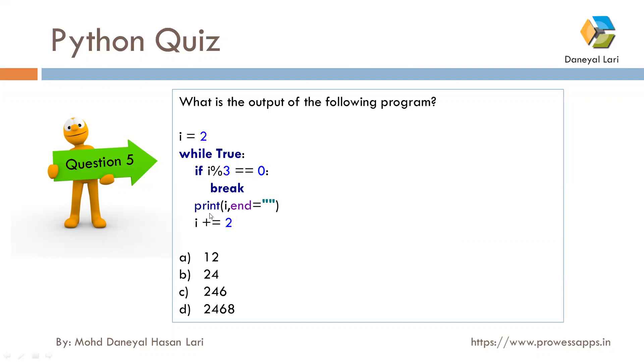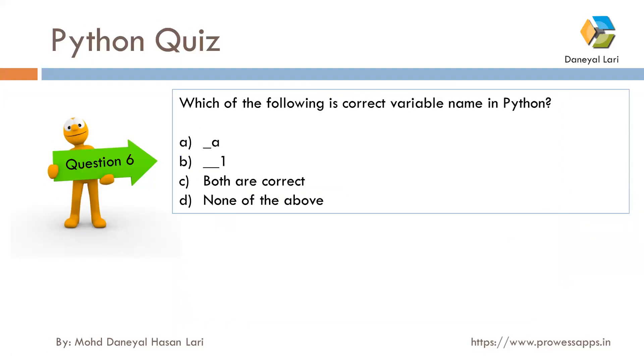Next question was: which of the following is correct variable name in Python? Both are variable names because we cannot start with a digit, but we can start with underscore. Underscore is permissible, so both are correct. The correct answer is C, both are correct.